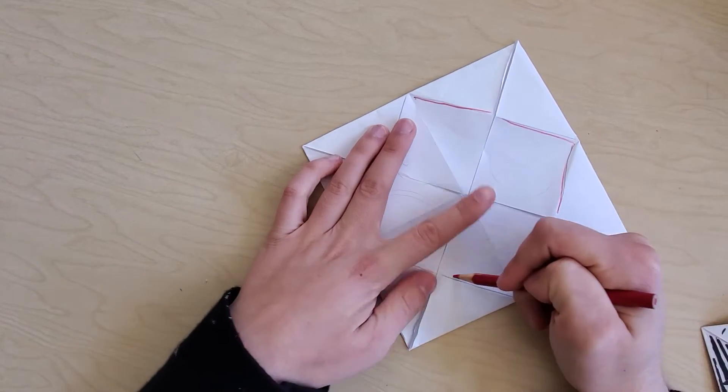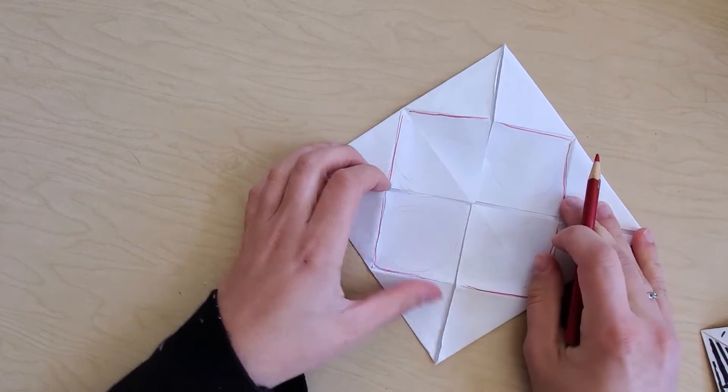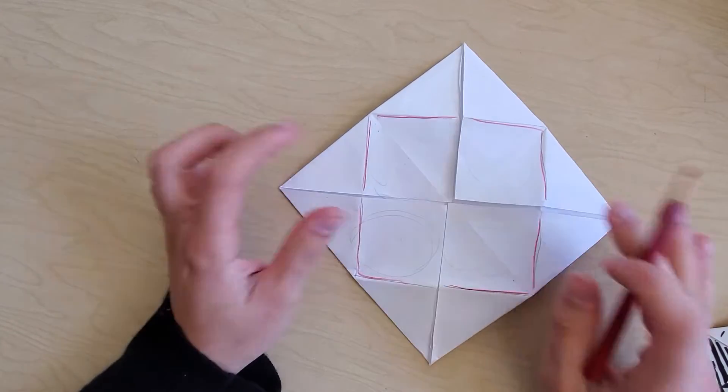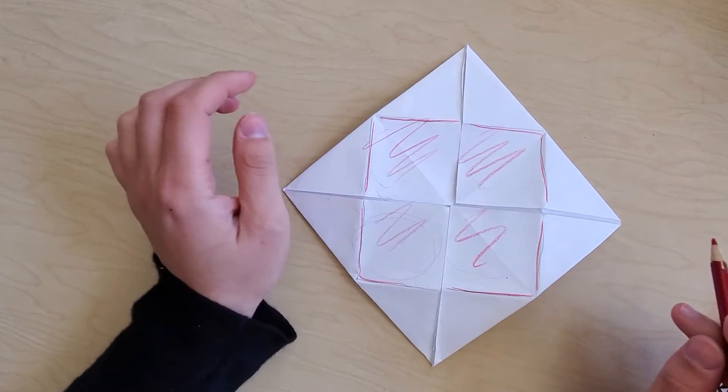Very important to do it on the side with the flaps, because if you do it on the other side that doesn't have this paper that lifts up, it's not going to work. You're not going to be able to see it. So this is where you're drawing first.